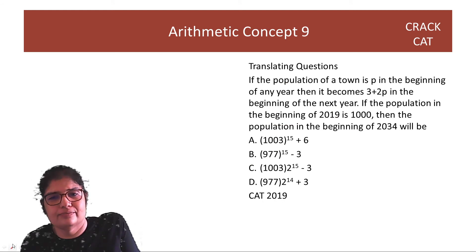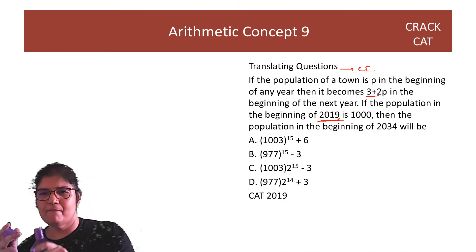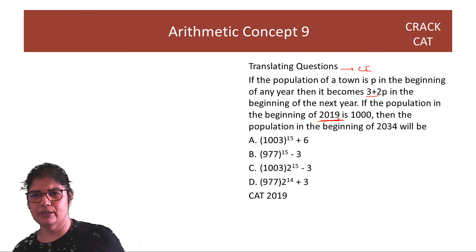Last concept. Translate questions. Abhi yeh dekho. Arithmetic ka question hai. Par ismein algebra bhi hai. Population of a town. 3 plus 2p. I hope you can see how the compound interest is used. So, you said forget all this. Yeh dekho 2019. So, let me just again read the question for you. Population of a town is p. At the end of the year, it becomes 3 plus 2p. 2019 mein wo 1000 hai. Then, the population at the beginning of 2034 will be what?